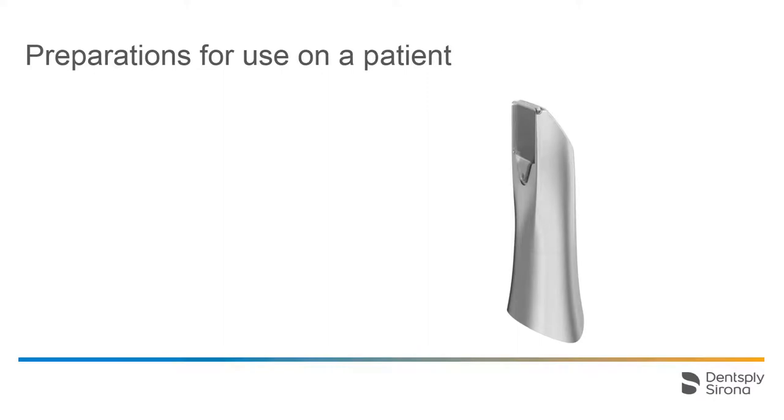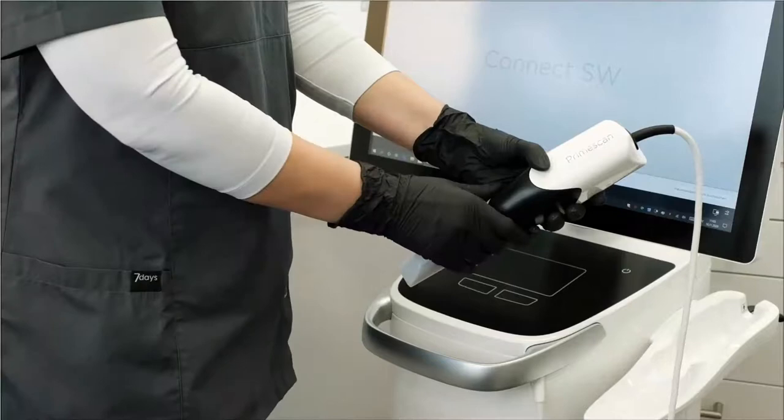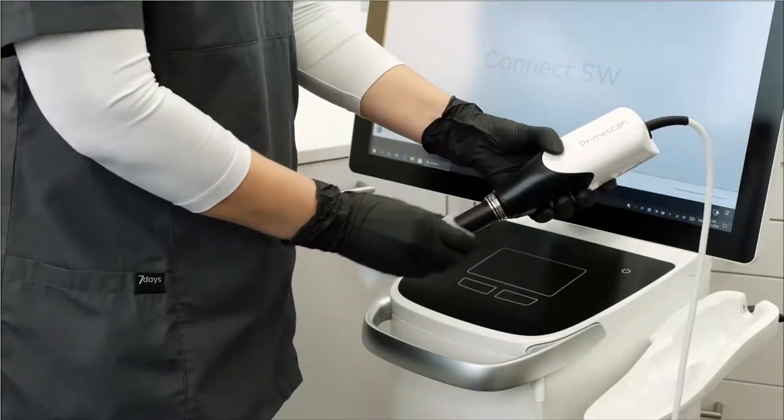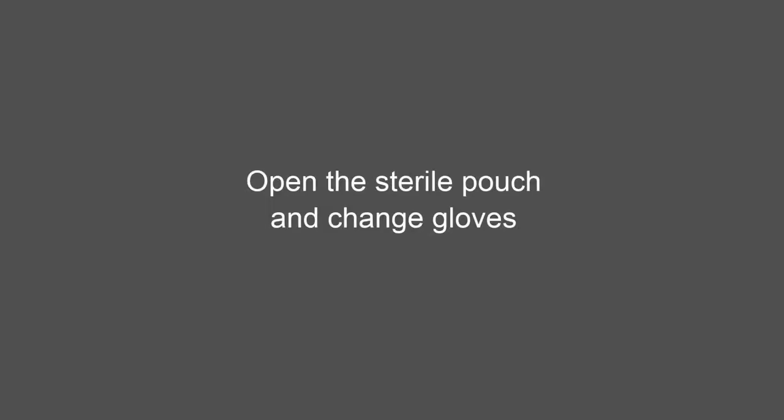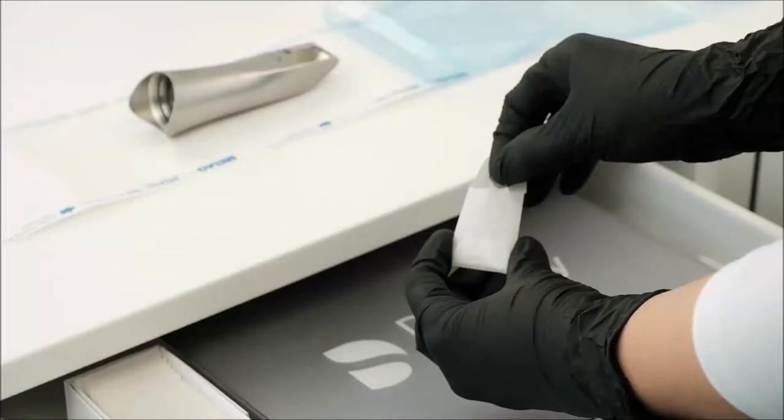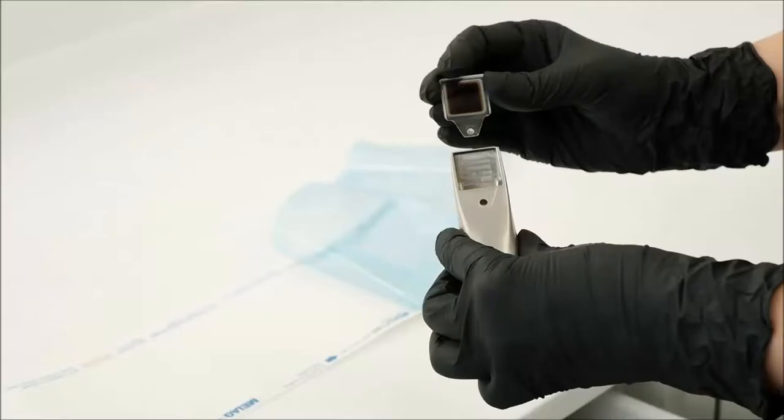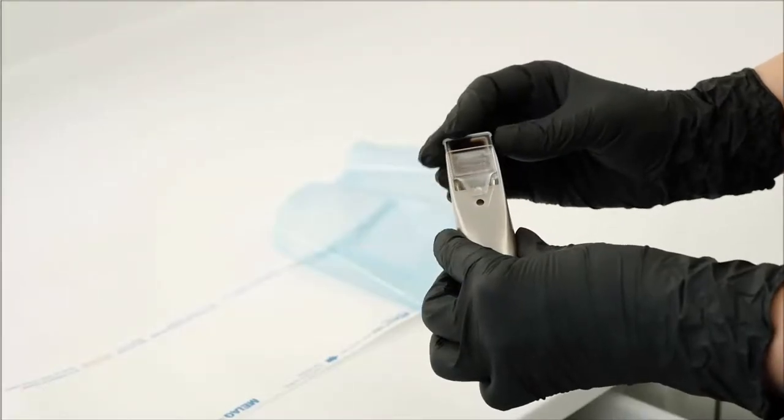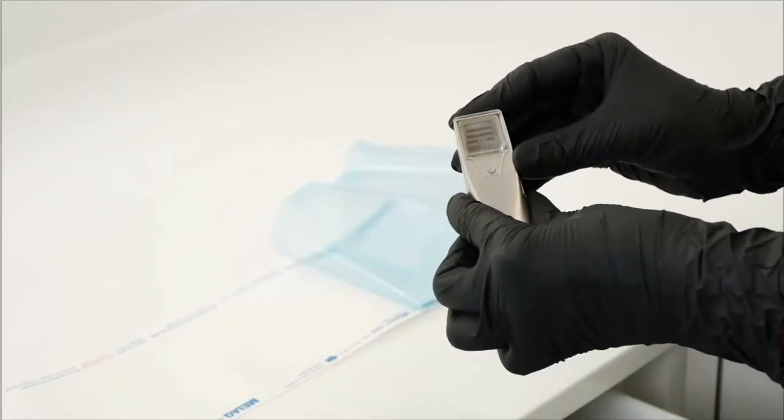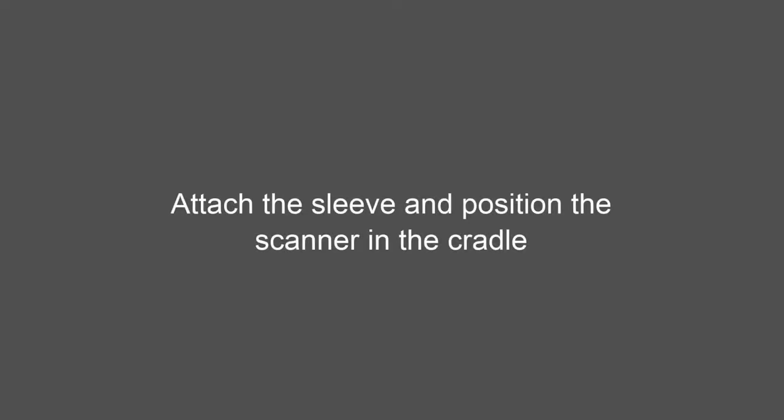Now, let's look at the preparations for use on the patient. Start by removing the white protective sleeve from the PrimeScan. Open the sterile pouch of the sleeve and put on clean gloves. Make sure the small notch fully snaps into place. Attach the sleeve, position the scanner in the cradle, and start using as soon as it's warmed up.